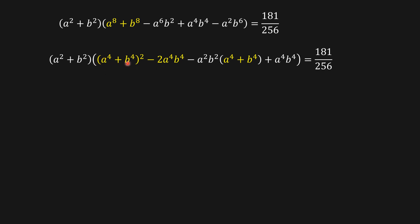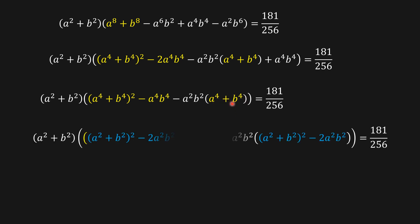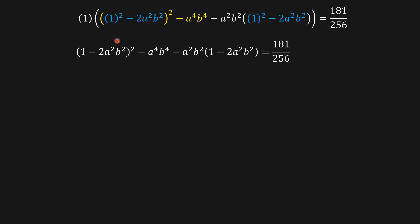Now I complete the square again for these terms. Adding these two together gives this expression, and completing the square inside the brackets we get this form — which is equivalent to the previous expression. We know that a² plus b² equals 1, so replacing those, we get: one multiplying this bracket gives us 1 minus 2a²b² squared minus the remaining term.